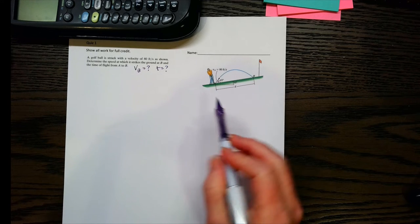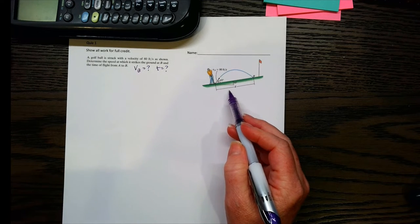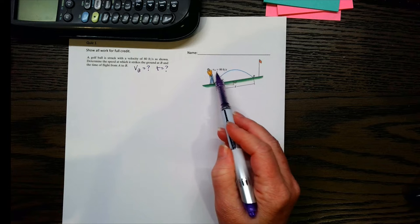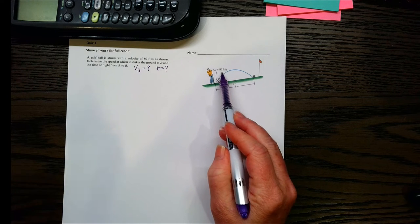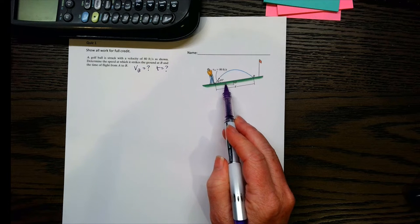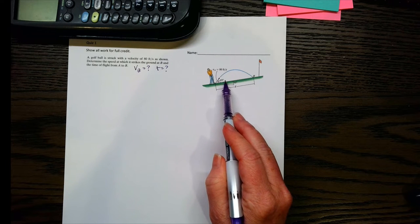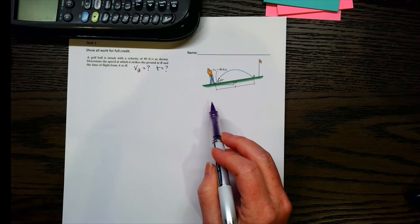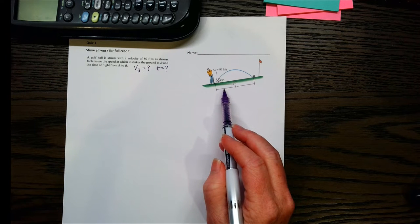Now if we look over here, notice we've got a few things listed. First of all, we have that initial velocity, that's that 80 feet per second it mentioned, and we have two angles. So I gave this as a quiz and a lot of people were a little confused as to what to do with the angles here.